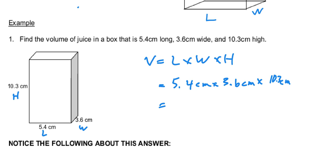Remember with our area, if we ever multiplied everything together twice, we always had something squared. But because now we have one, two, three things multiplied together, it's now centimeters cubed. So here's what we do — we take these numbers and multiply them together, and we end up with 200.2 centimeters cubed for our answer.